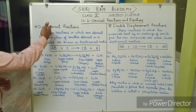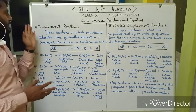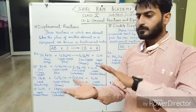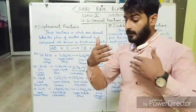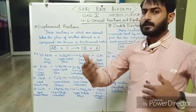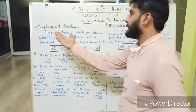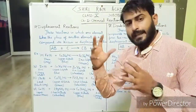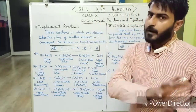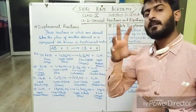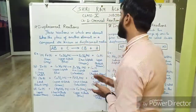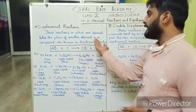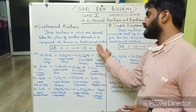So students, let's look at displacement reactions. 'Displacement' — 'placement' means where something is placed; 'displace' means to move it or change it from that place. So displacement reactions are those reactions in which one element takes the place of another element in a compound.